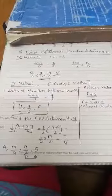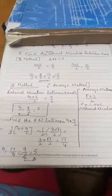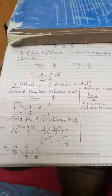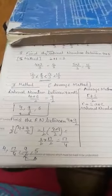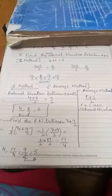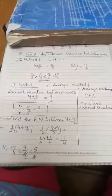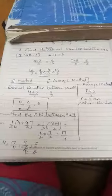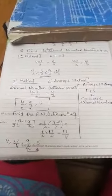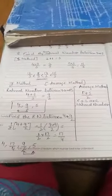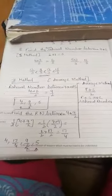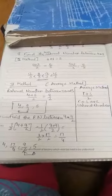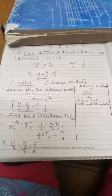Now, again we have to find the rational number between 4 and 9 by 2. Again, we will find the average. That is 1 by 2 bracket 4 plus 9 by 2 is equal to 1 by 2, 8 plus 9 by 2 by taking the LCM. So, 1 by 2 is equal to 17 by 2, 17 by 4. So, the number between 4 and 9 by 2 is 17 by 4.